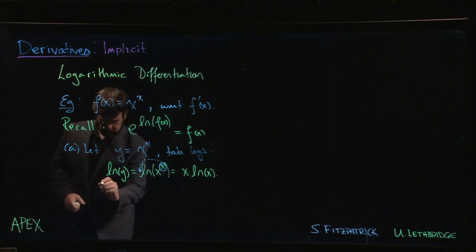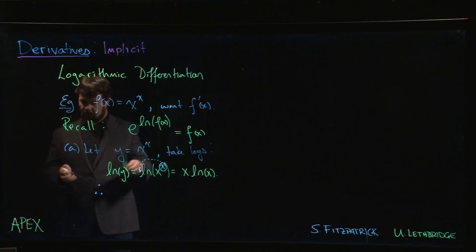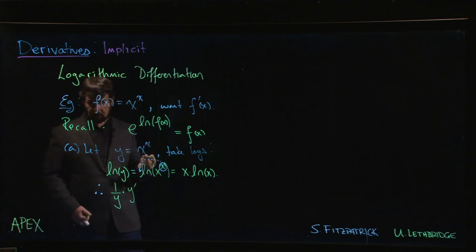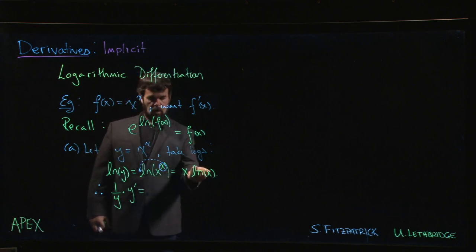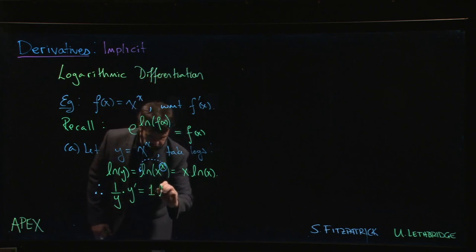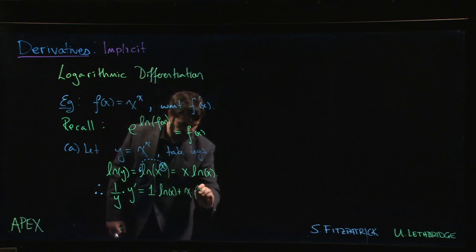So we take the derivative of both sides. For the derivative of the natural log of y, we get 1 over y, but implicit differentiation says you must also multiply by y prime—that's just chain rule. On the other side, you can do product rule: the derivative of x is 1, so we have 1 times the natural log of x plus x times the derivative of log x, which is 1 over x.